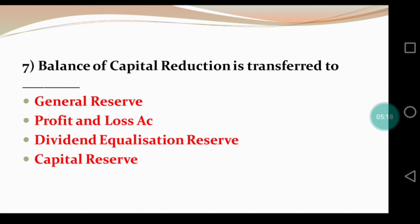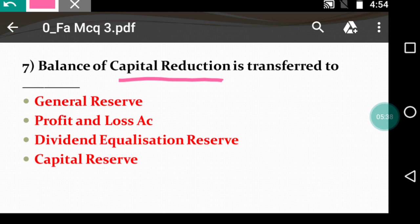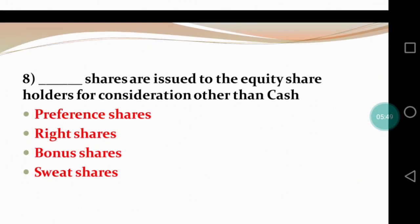Question 7: The balance of capital reduction is transferred to — dash — general reserve, profit and loss, dividend equalization reserve, or capital reserve. This objective has been asked in many years' papers. Whatever balance of capital reduction remains after passing the last entry in internal reconstruction, it is always transferred to capital reserve. So the right answer is capital reserve.